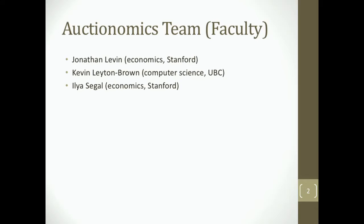Before I get started, I really want to mention the team. I get to proudly tell you about all kinds of things because I was invited by the FCC to put together a team, and my team is an all-star team. In alphabetical order: Jonathan Levin from Stanford, a John Bates Clark medalist and one of the great economists of his generation; Kevin Leighton Brown from computer science at the University of British Columbia, responsible for most of the computational innovations; and Ilya Segal, another colleague of mine at Stanford, from whom most of the good economic ideas in this project came.